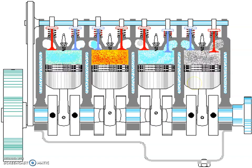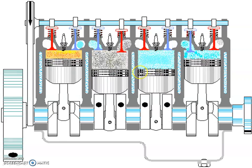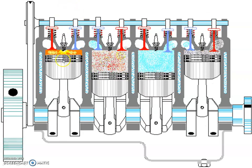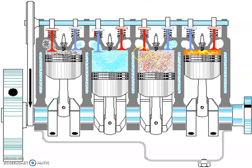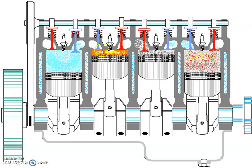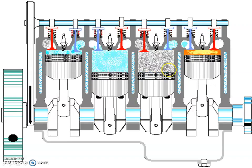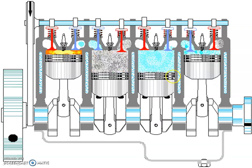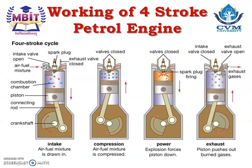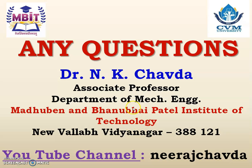Here is a question: in which sequence does the power stroke take place in a four-cylinder, four-stroke petrol engine? Consider cylinder number one, two, three, and four. Kindly provide your answer in the comment box. That is the working of a four-stroke petrol engine — this is the figure you need to draw when writing in an exam. Kindly ask any queries in the comment box.